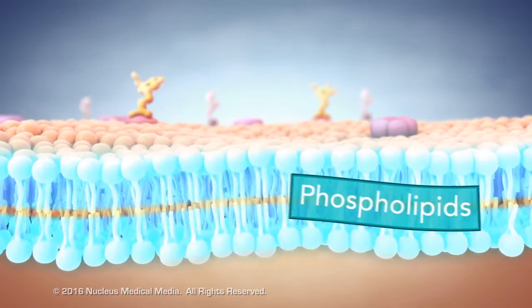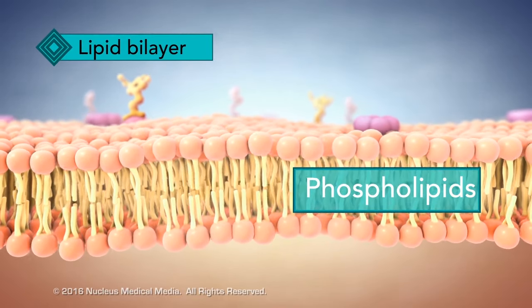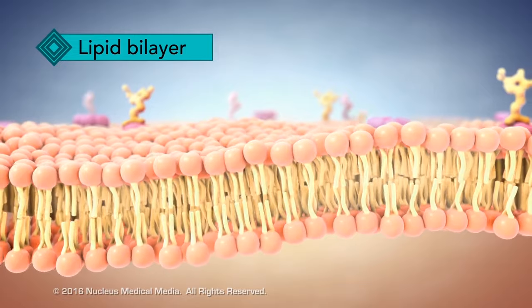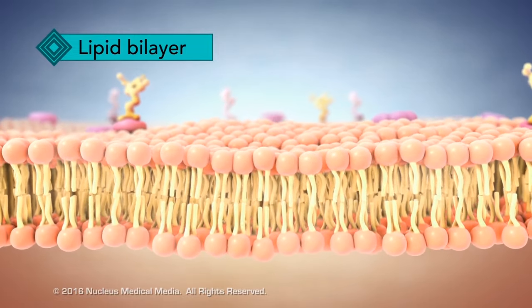The cell membrane has two layers of phospholipids, referred to as a lipid bilayer. The lipid bilayer isn't rigid. The phospholipids in it have the ability to move in a flexible, wave-like motion.